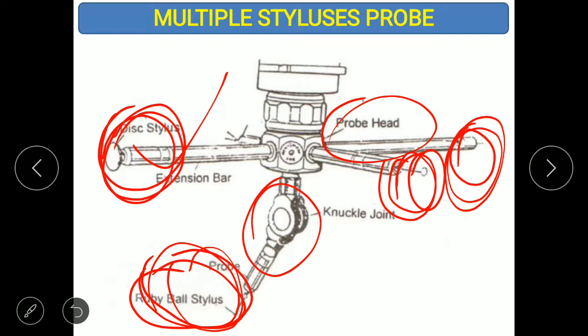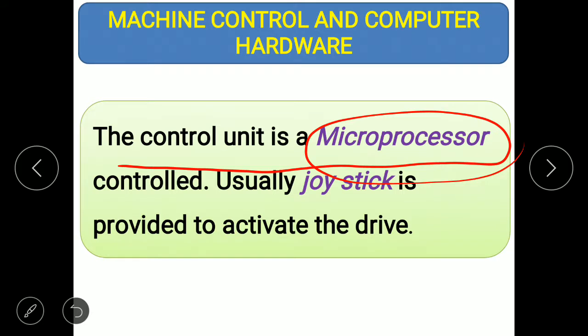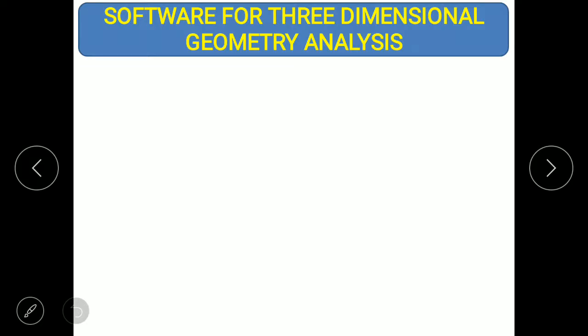Regarding machine control and computer hardware: the CMM's stylus comes in contact with the workpiece, and the sensed signal is converted into electronic signals using microprocessors. The control unit is microprocessor-controlled, and usually a joystick is provided to activate the drive. The entire system is microprocessor-controlled.